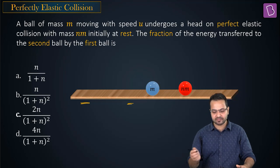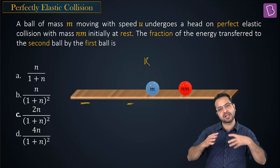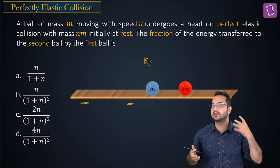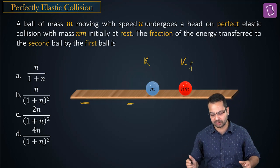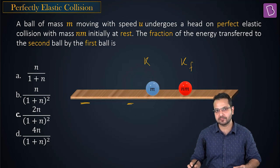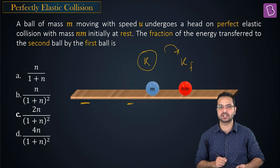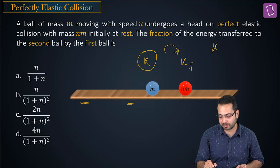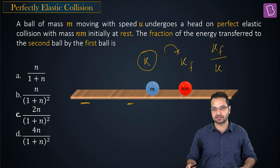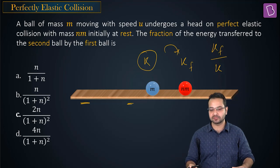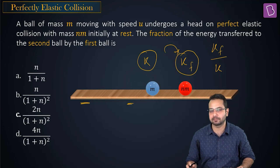Let the initial kinetic energy of the system be K — all with ball m since it was the only one moving. After collision, let the kinetic energy of nm be Kf. The fraction of kinetic energy transferred is Kf divided by K. That is the quantity we are looking for.